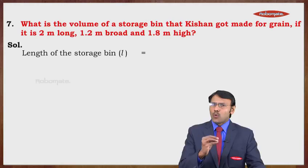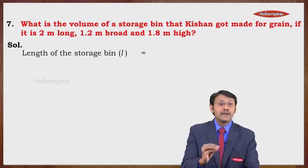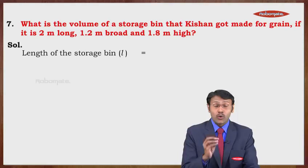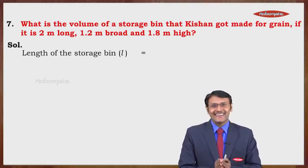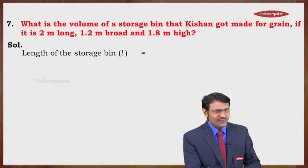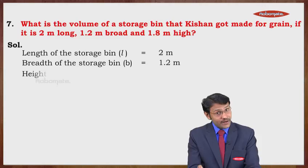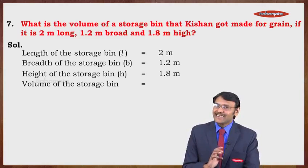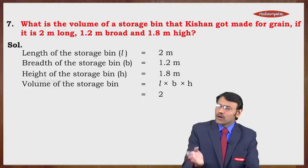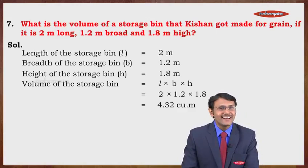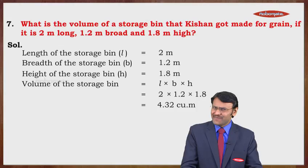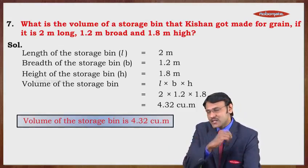One more example: what is the volume of a storage bin made for grains if it is 2 meters long, 1.2 meters broad, and 1.8 meters high? This is a cuboid; we need to find its volume. L = 2 m, B = 1.2 m, H = 1.8 m. Volume = L × B × H = 2 × 1.2 × 1.8 = 4.32 cubic meters. Therefore, the volume of the storage bin is 4.32 cubic meters.